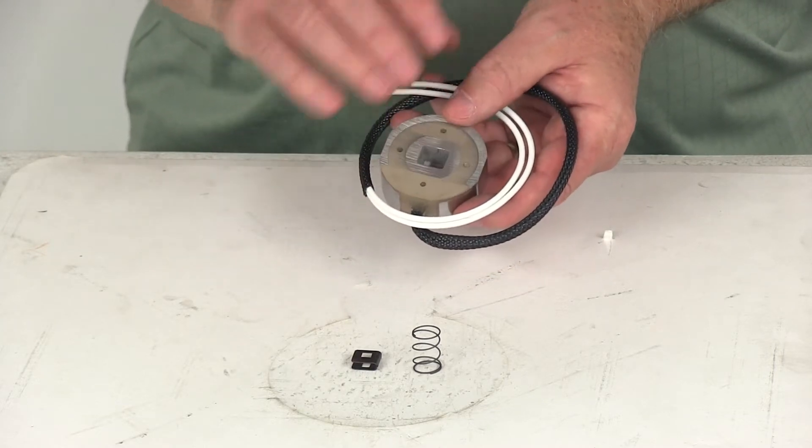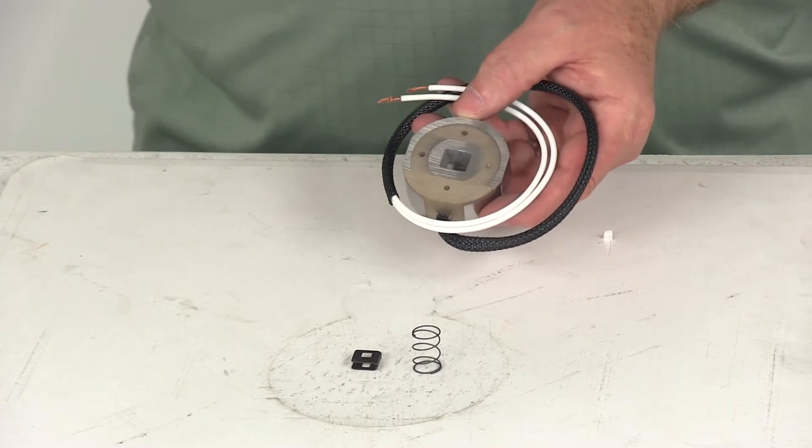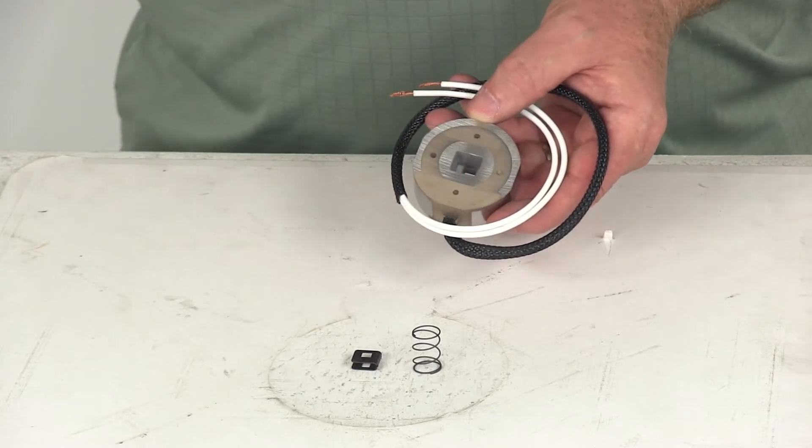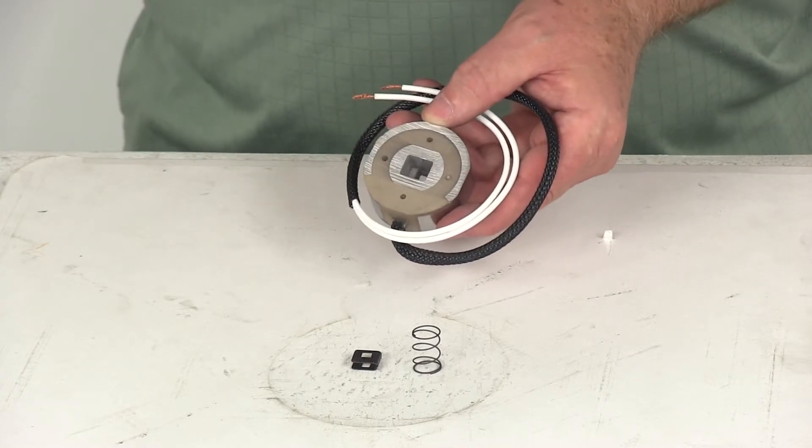This complete kit will allow you to replace the worn out magnet on your 7-inch or 10-inch trailer brakes. It helps you save money and time because it's better than having to replace the whole brake assembly.